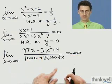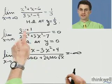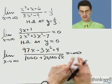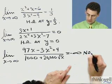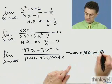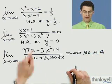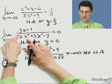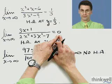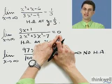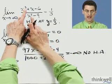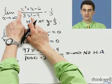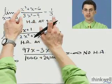So you're seeing the pattern. If the highest power on the top is greater than the highest power on the bottom, then the limit doesn't exist and there's no horizontal asymptote. If the power on the bottom is greater than the power on the top, the limit exists and will always equal 0. And if the highest term on top is the same as the highest term on the bottom, then the limit is just the coefficient of the top term divided by the coefficient of the bottom term.